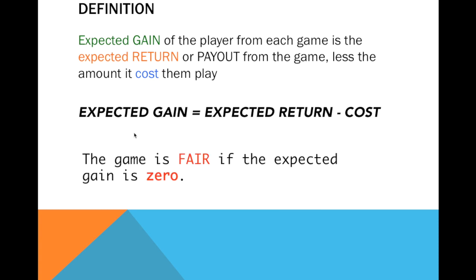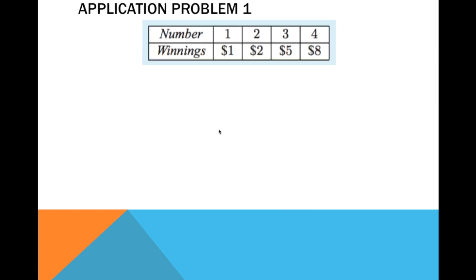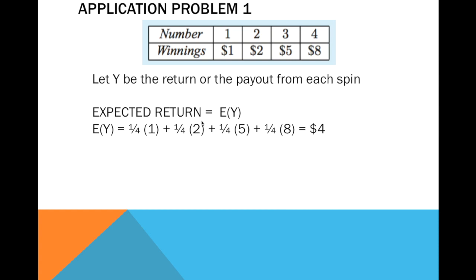The game is fair if the expected gain is zero — like in business where you have no profit at all. And how can you have zero expected gain? That is if the expected return is the same as the cost. Now let's illustrate the concept of expected return using application problem one. Let's go back to this table. Expected return is equal to E of Y, where Y represents the return or the payout from each spin.